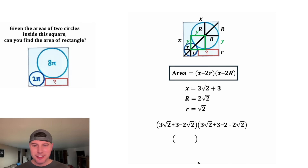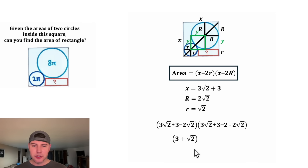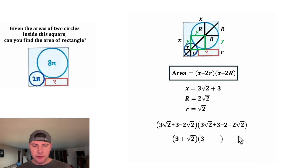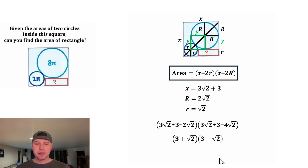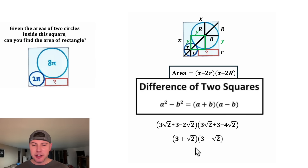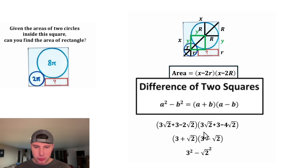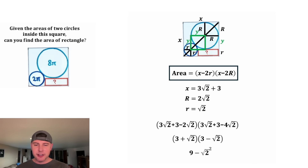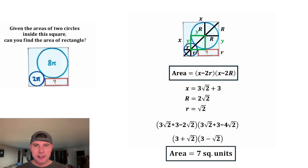Now we can simplify. We copy down the positive 3, then add 3√2 minus 2√2, which is 1√2. For the other factor, we copy down 3, then 3√2 minus 4√2 gives negative √2. Now we multiply: this is a difference of two squares. If you have (a + b)(a − b), it equals a² − b². So this becomes 3² minus (√2)², which is 9 minus 2, equal to 7. The area of the rectangle is 7 square units.